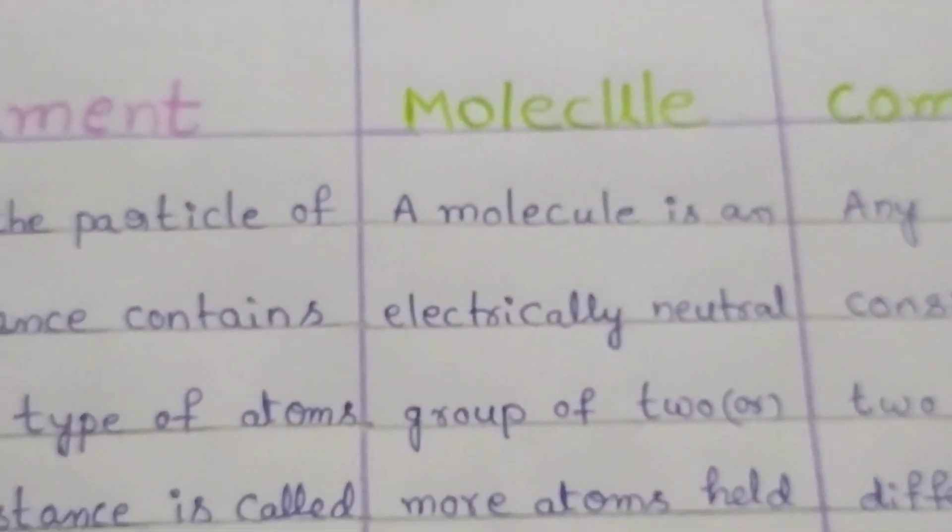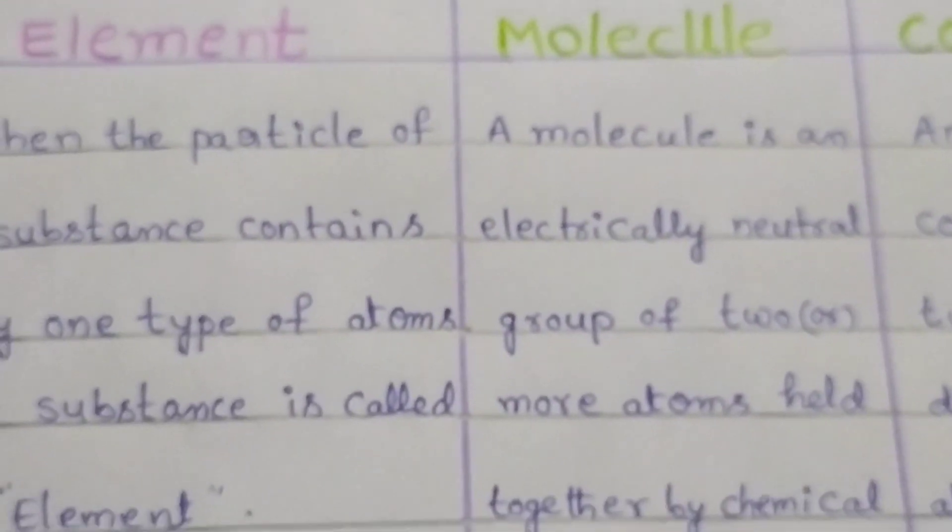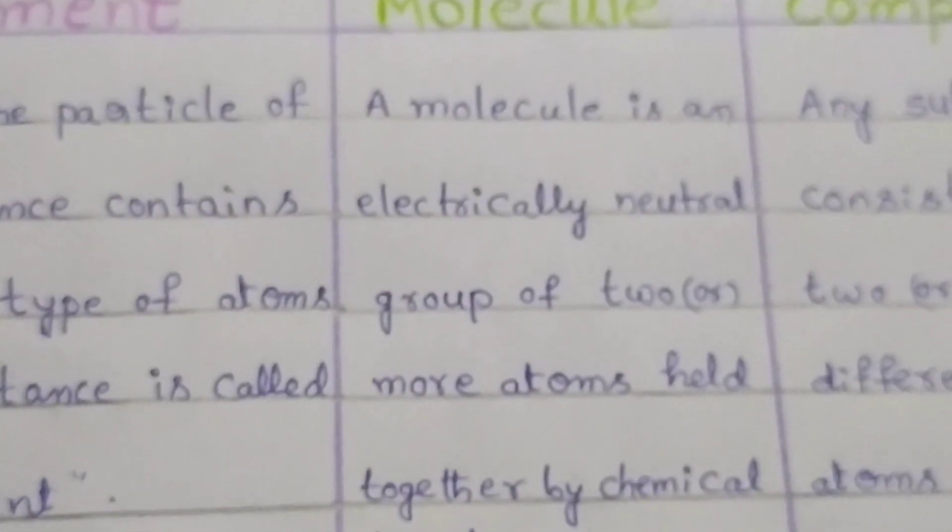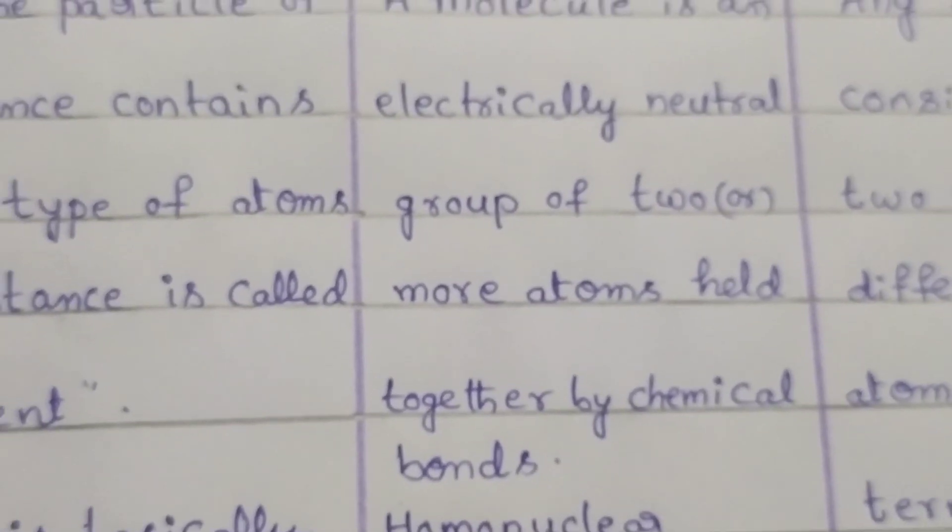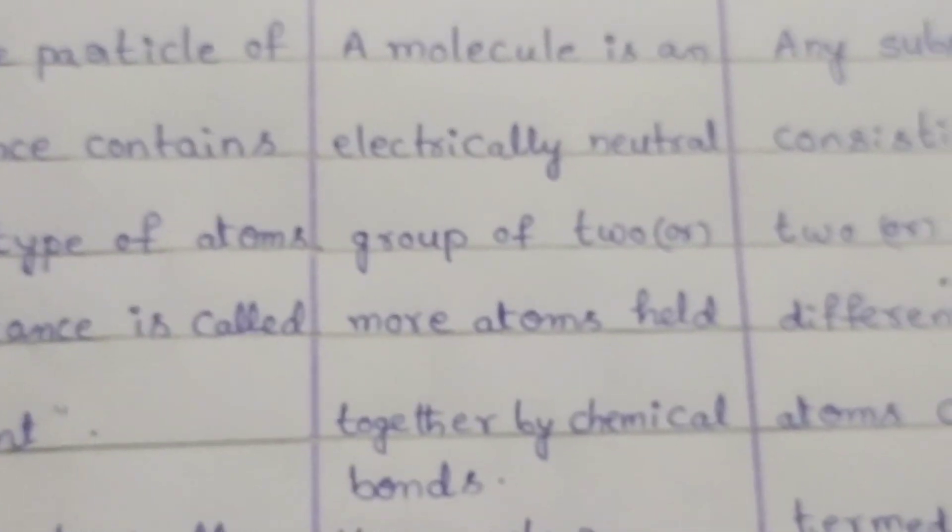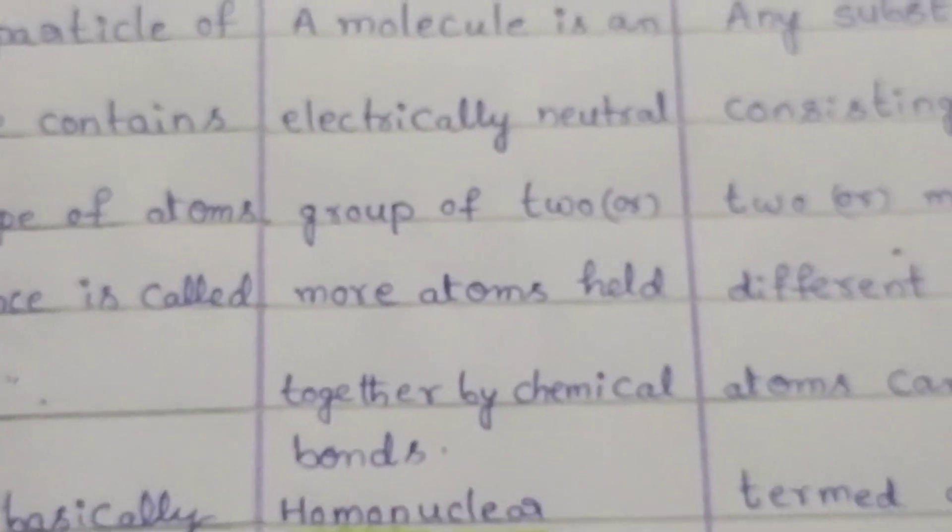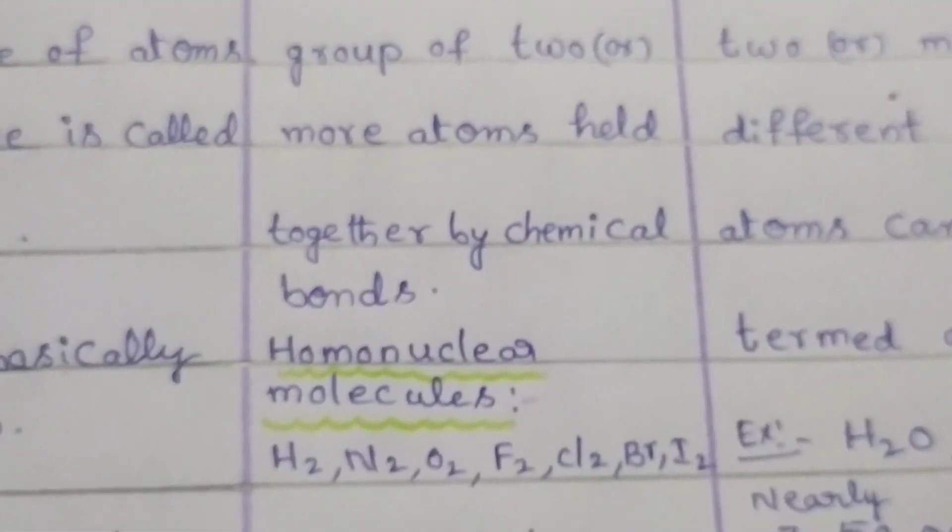Next, we discuss about a molecule. A molecule is an electrically neutral group of two or more atoms held together by chemical bonds. That means molecules are neutral in nature. They do not contain any type of charges on them.